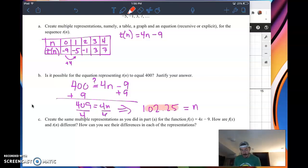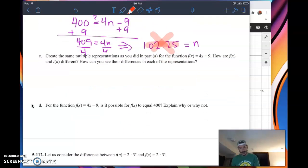Is it possible for the equation representing t of n to equal 400? Justify your answer. The easiest way to do this is to go ahead and just assume it is possible. Is it possible for that to equal 400? And then do some solving. If it was possible, what term number would it be? I'm going to use my rules of algebra. 409 equals 4n, and then I divide by 4, and I get 102.25. Is it possible to have a 102nd and a quarter term? The answer is no.